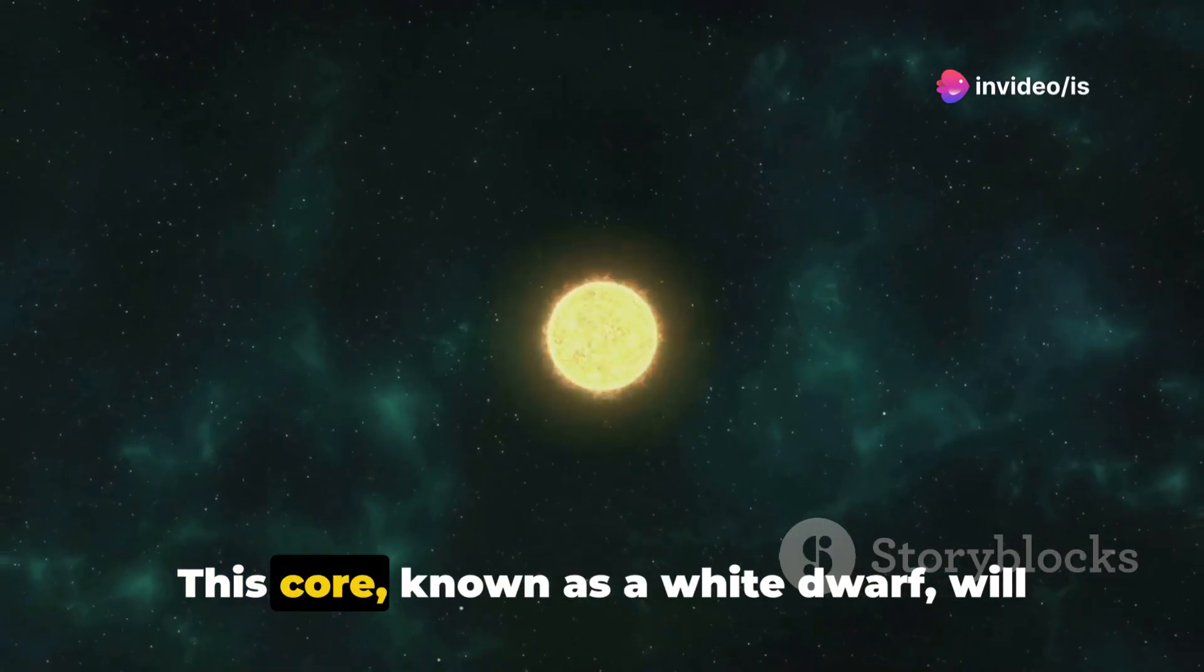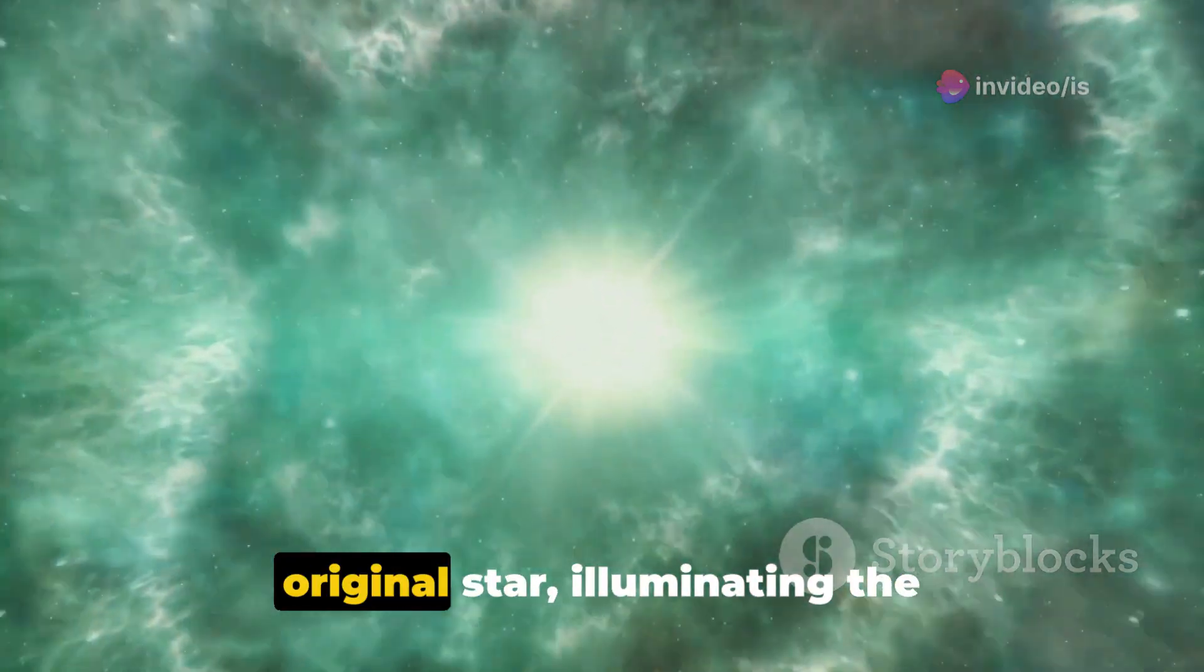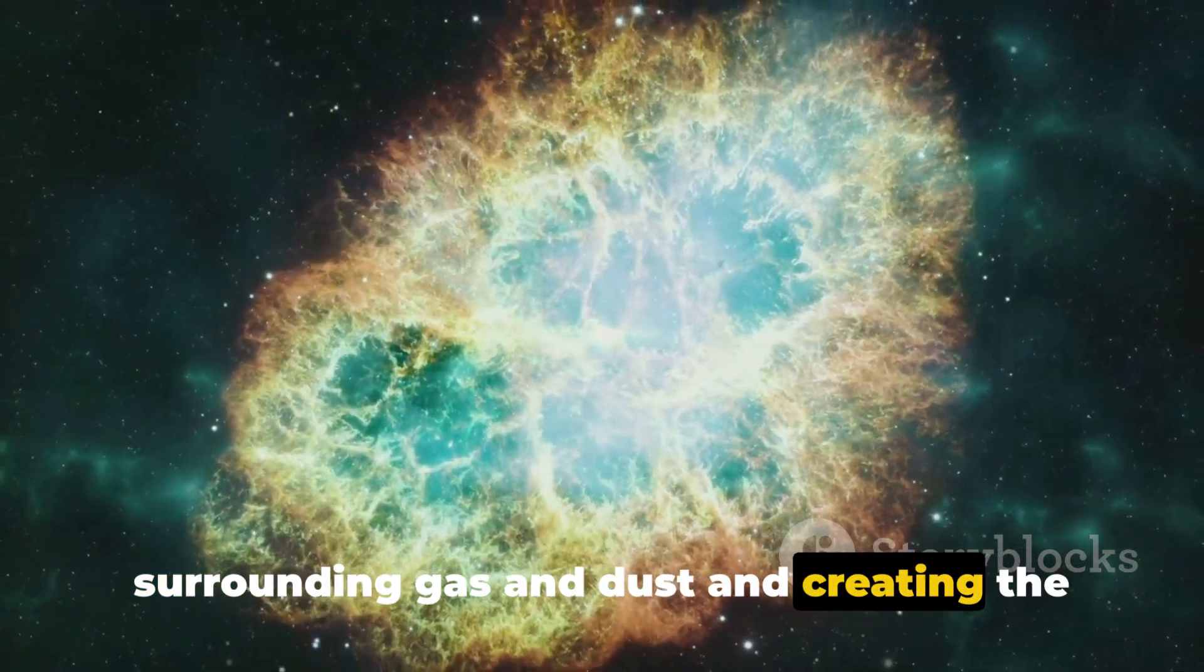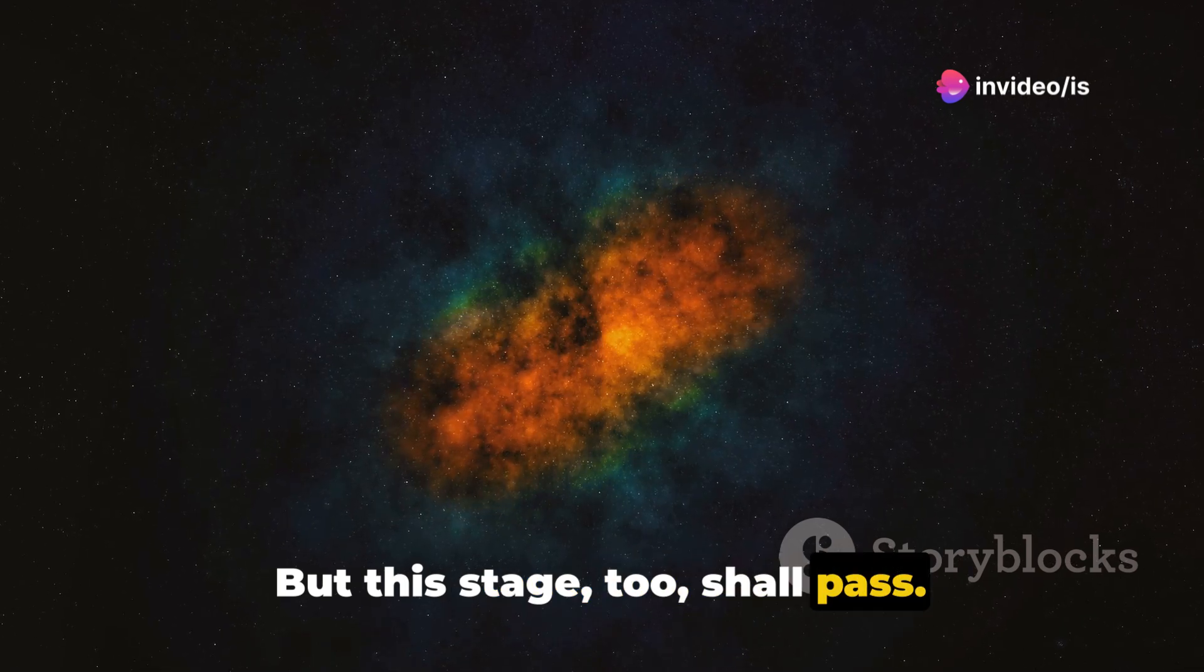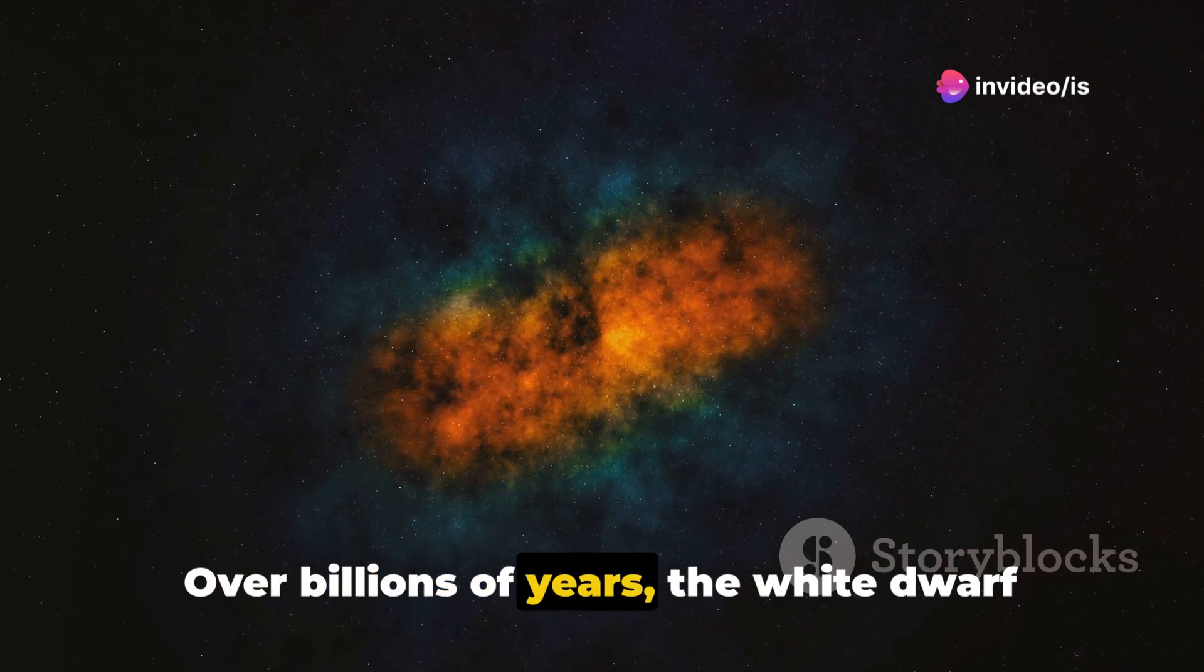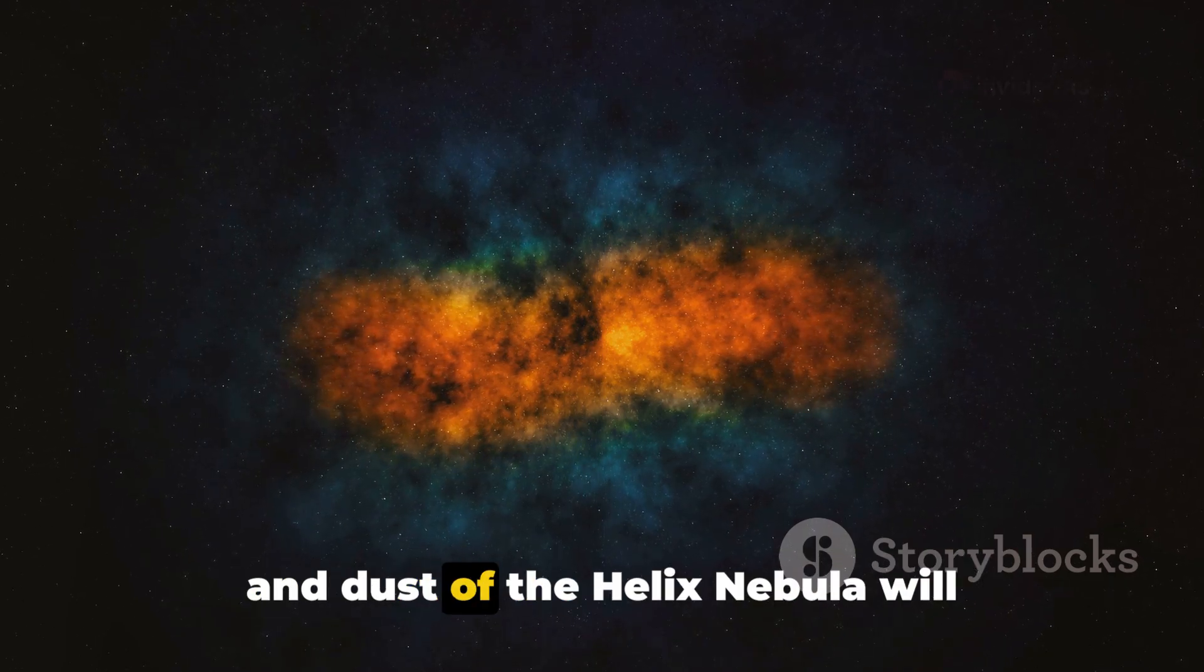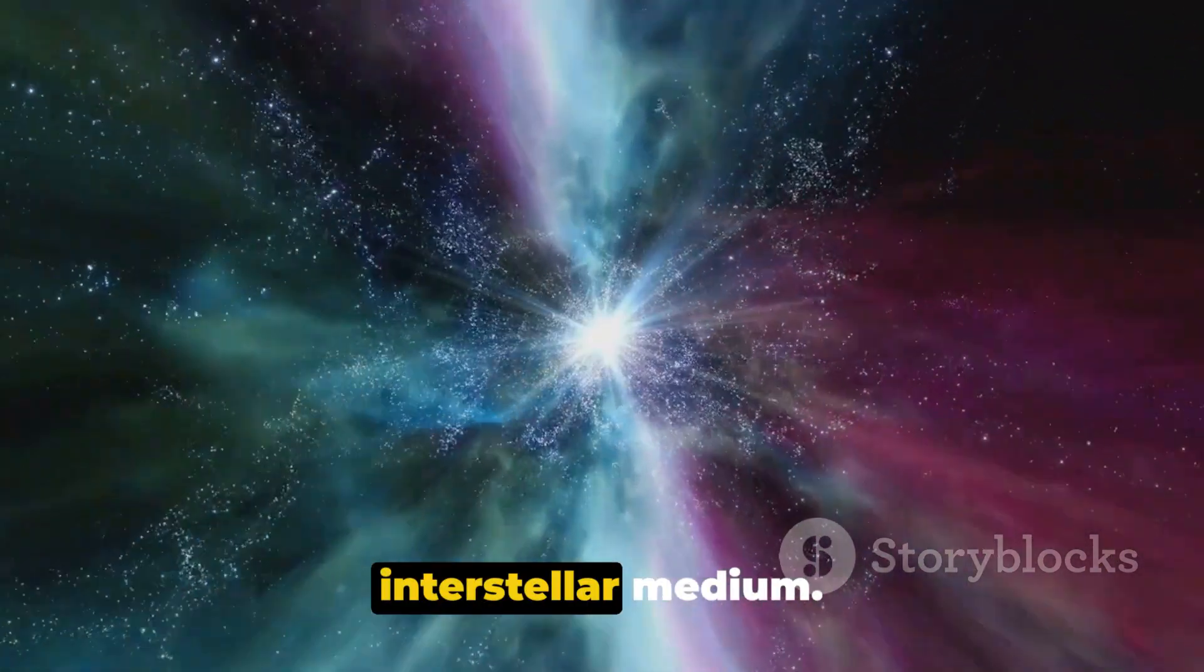This core, known as a white dwarf, will continue to glow with the heat of the original star, illuminating the surrounding gas and dust and creating the captivating patterns we see in the Helix Nebula. But this stage, too, shall pass. Over billions of years, the white dwarf will cool and fade, and the glowing gas and dust of the Helix Nebula will dissipate, absorbed back into the interstellar medium.